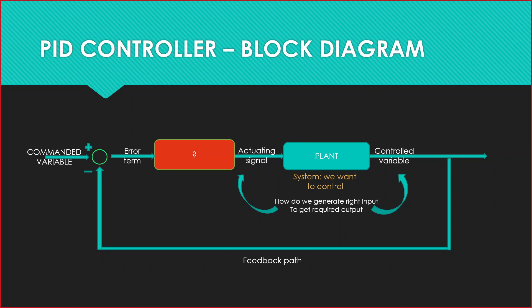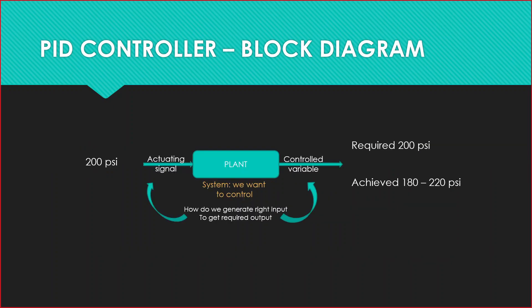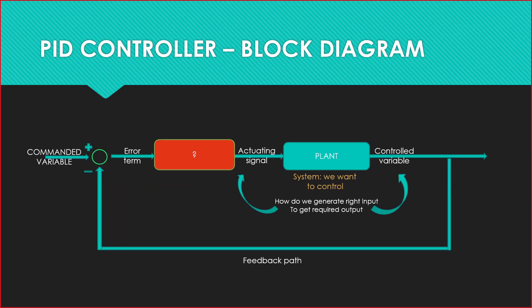We have got 200 PSI required, but we achieved 180 PSI. So we have created a feedback system, we have created a feedback path.